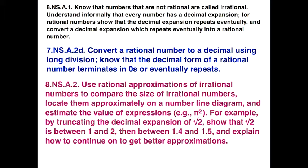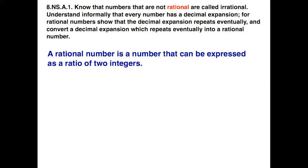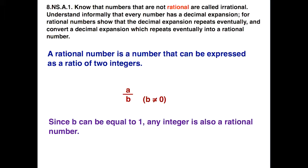Basically, what students will do here is compare the size of irrational numbers. Let's look at the idea of rational. By definition, a rational number is a number that can be expressed as a ratio of two integers. For example, if we have A and B both representing integers with B not equal to 0, this is how we would represent that. Since B can equal 1, any integer is also a rational number. Symbolically, A over 1 equals A, so any integer is also a rational number.